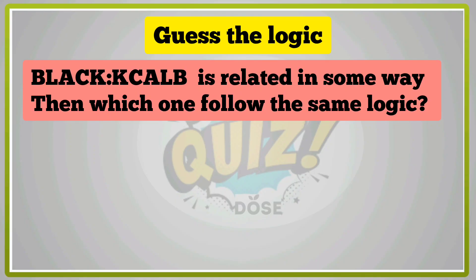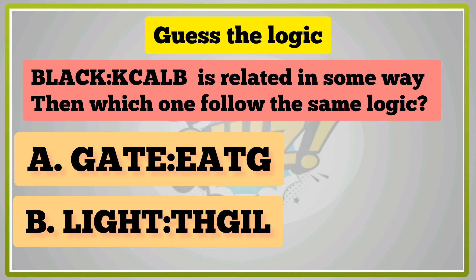B, L, A, C, K, K, C, A, L, B is related in some way, then which one follows the same logic?